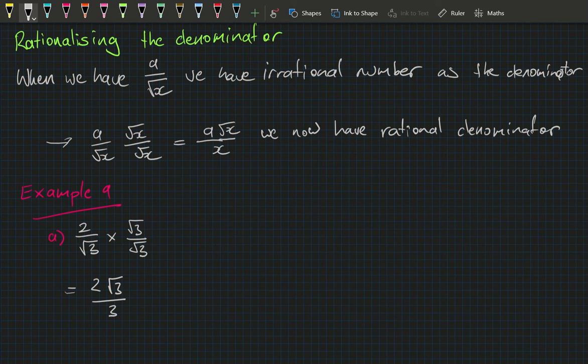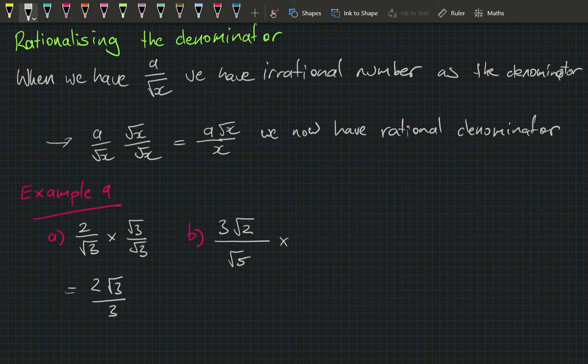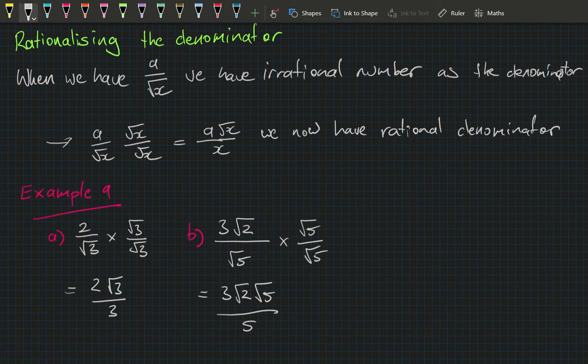Part b: 3 times square root of 2 all divided by square root of 5. Multiply by square root of 5 over square root of 5 — we're just multiplying by one. We get 3 times square root of 2 times square root of 5 over 5, and using our rules for surds that becomes 3 times square root of 10 over 5. Since 3 and 5 have no common factors, the fraction is fully simplified.